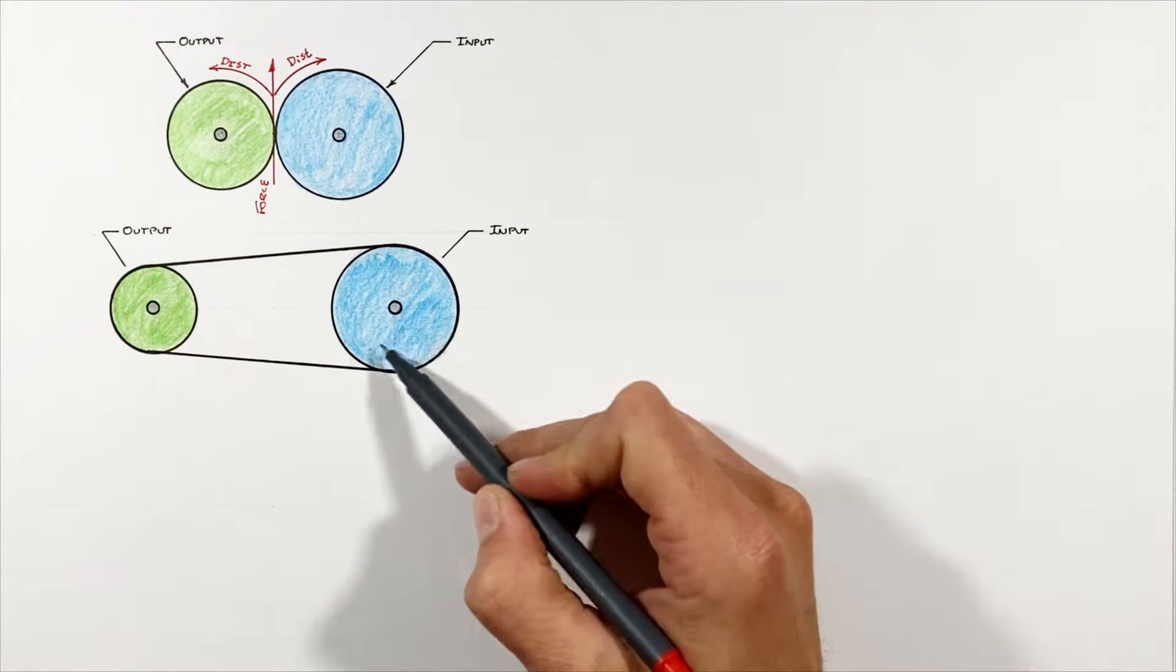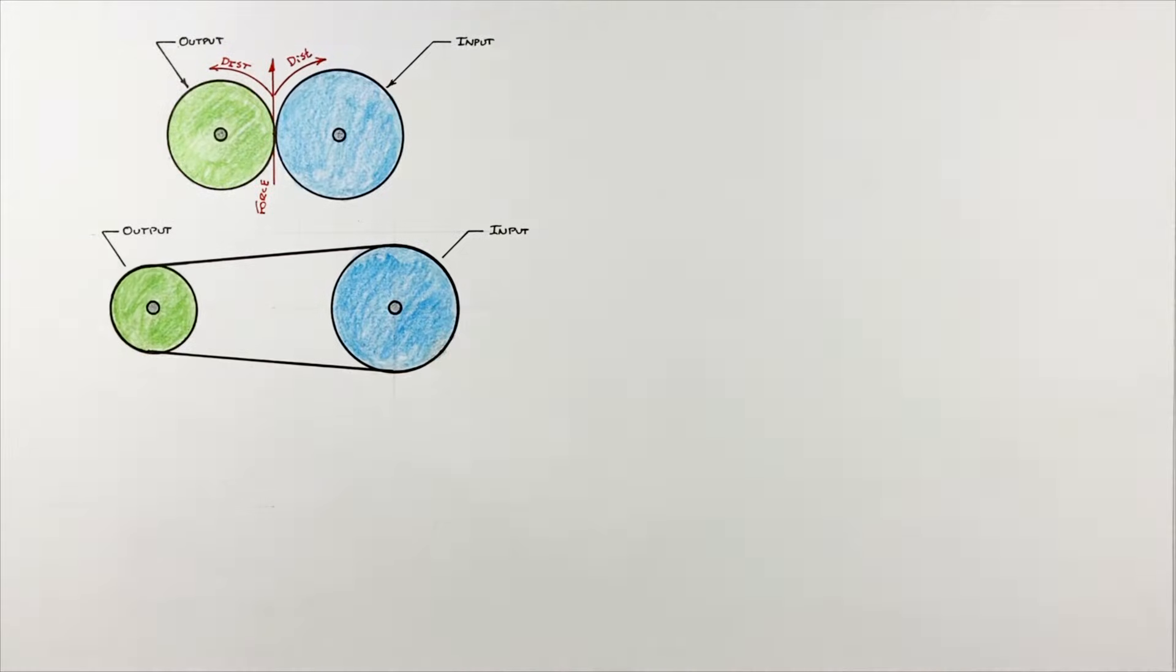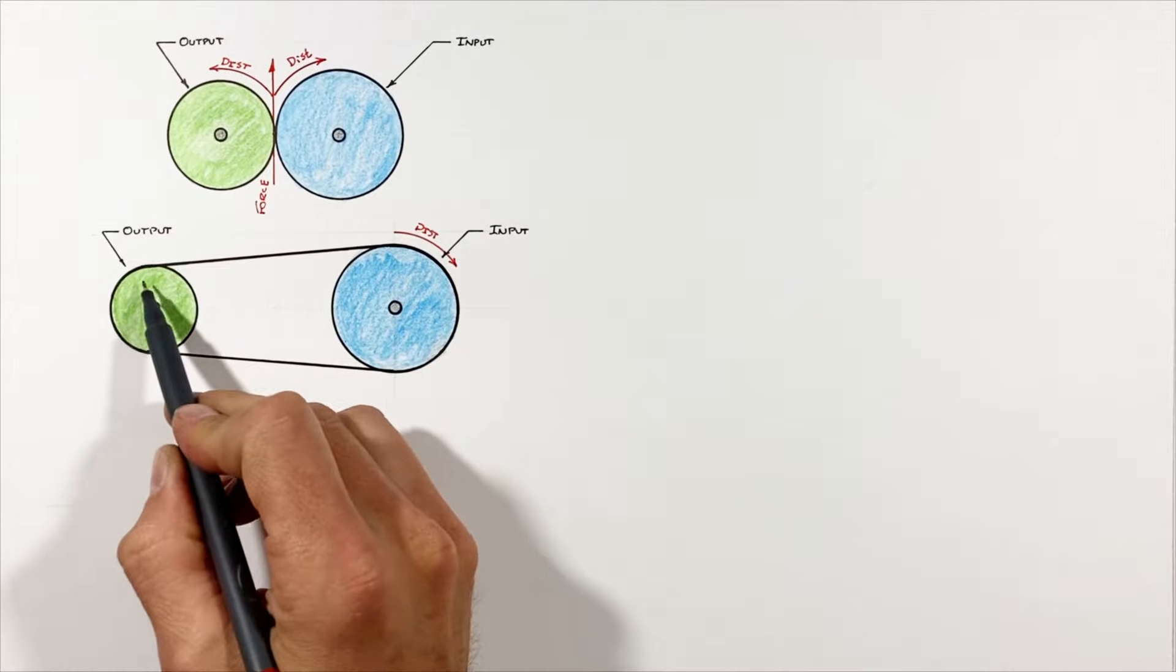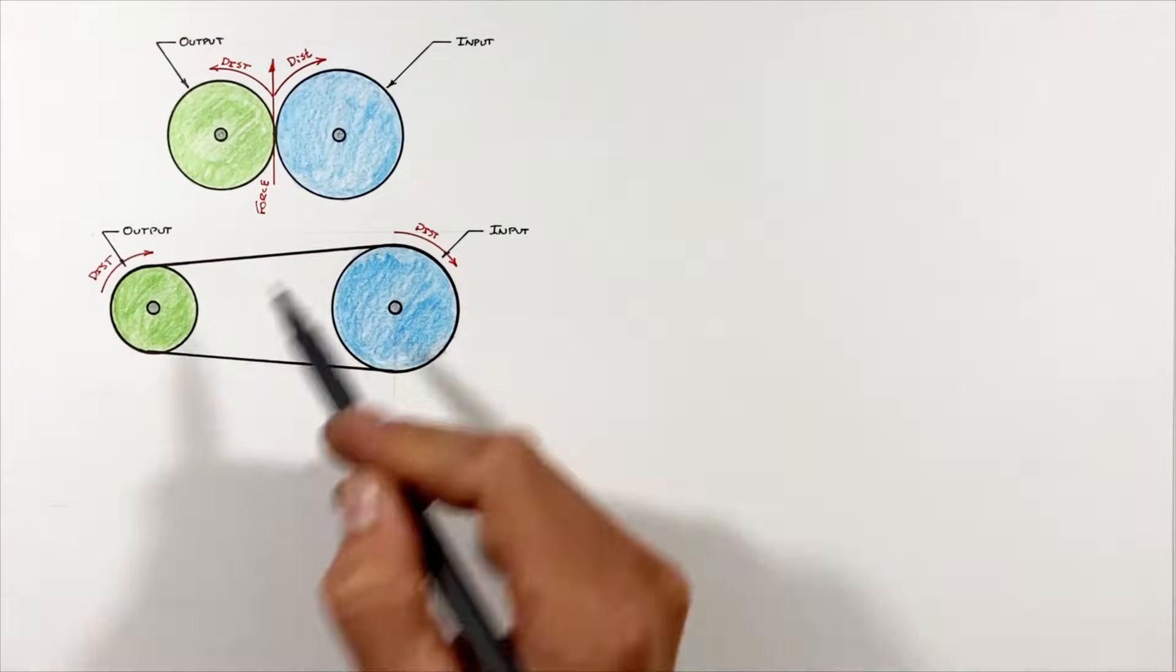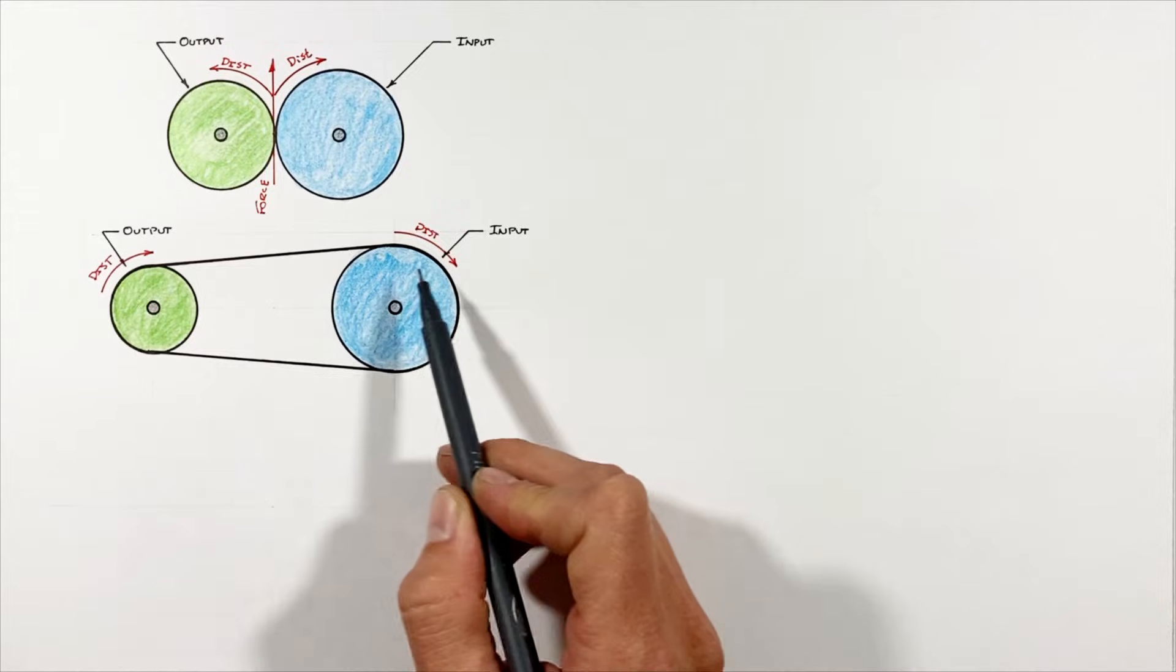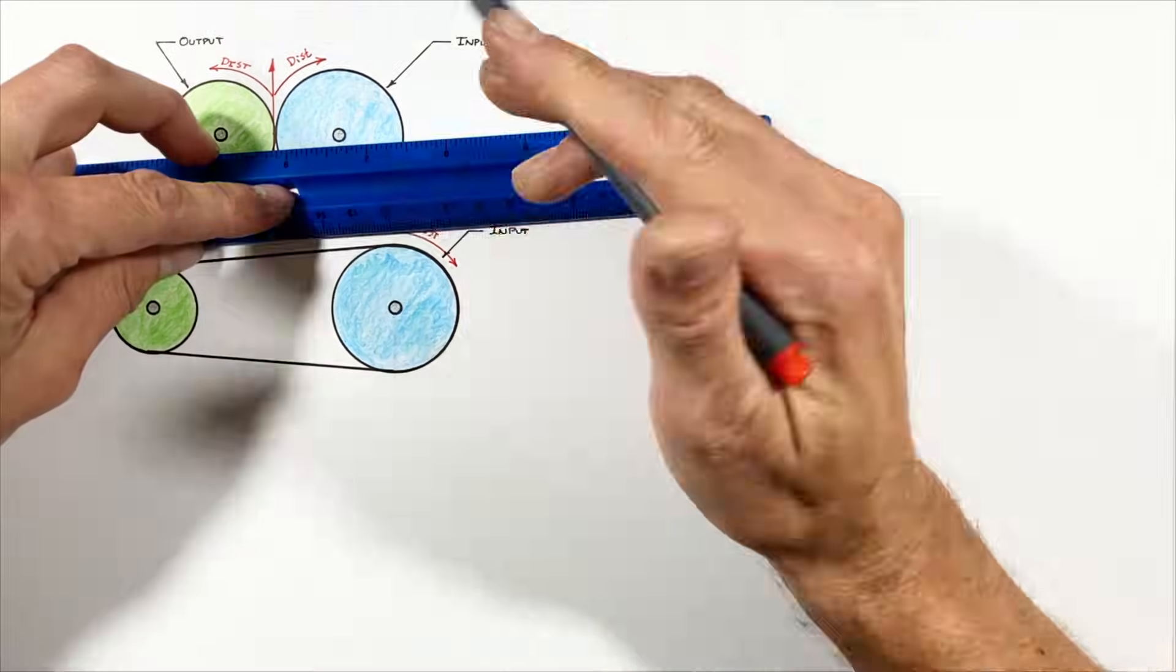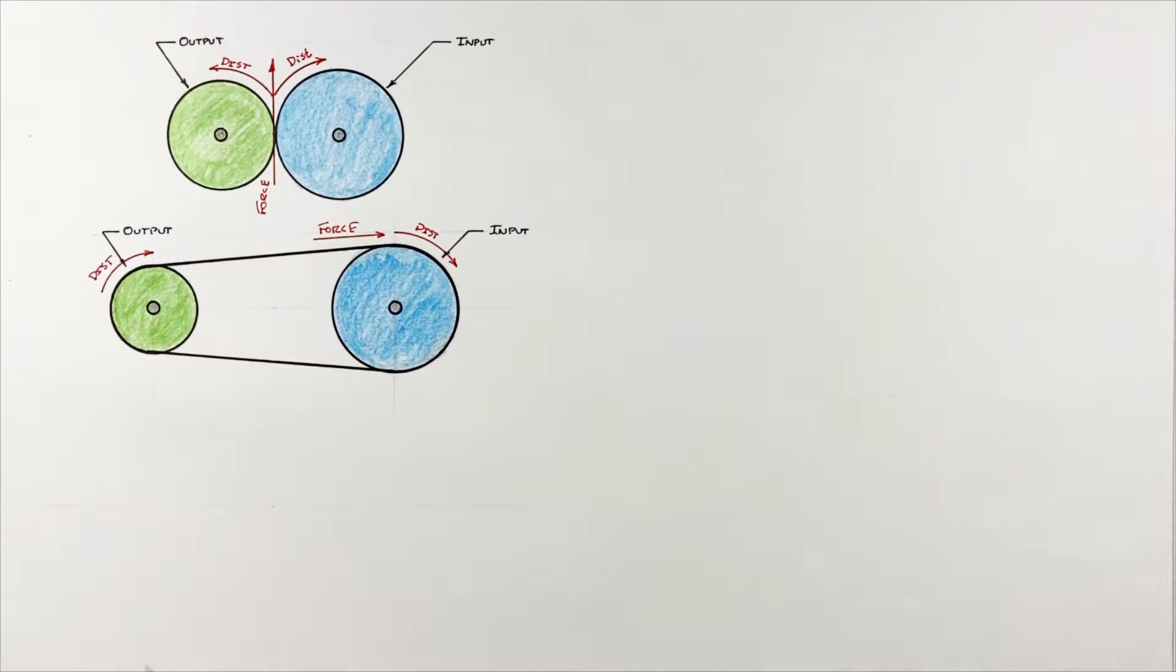And a sprocket and chain is really no different. If this input sprocket rotates so that it pulls five links of chain onto the sprocket, then five links of chain must be pulled along this output sprocket. Now because it's the role of this chain or belt to transfer force from the input sprocket to the output sprocket, if the input sprocket exerts a certain force on the chain, then that same force is going to act on the edge of the output sprocket.